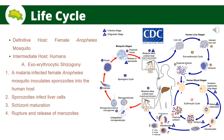The malaria parasite life cycle involves two hosts: the female Anopheles mosquito as the definitive host and humans as the intermediate host. During a blood meal, a malaria-infected female Anopheles mosquito inoculates sporozoites into the human host. The sporozoites infect liver cells and undergo exoerythrocytic schizogony. They then mature into schizonts which rupture and release merozoites. For P. vivax and P. ovale, a dormant stage called hypnozoites can persist in the liver and cause relapses weeks or even years later.